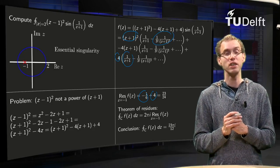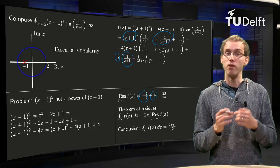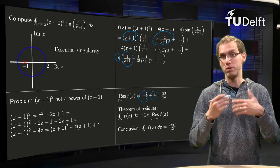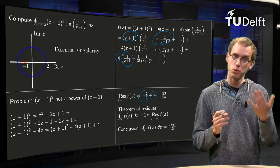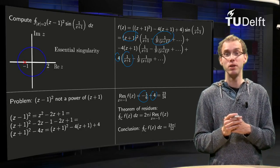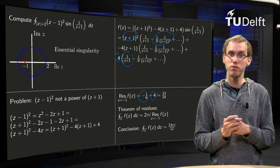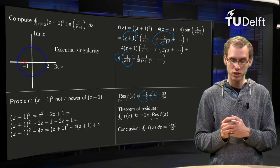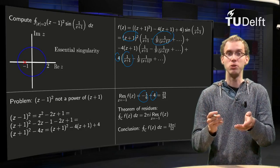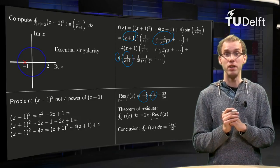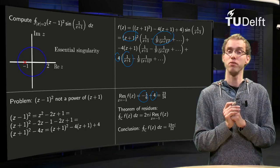Applying the theorem of residues: the integral along C of f dz equals 2πi times the sum of the residues. With only one residue at z = -1 equal to 23/24, the integral equals 2π times 23/24, which gives 23π/12.